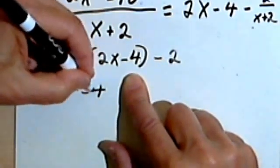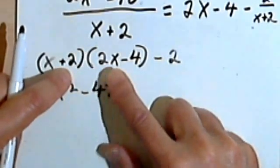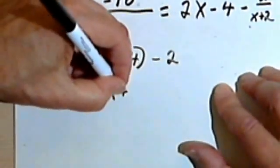My inside terms are 2 and 2x, so that gives me a positive 4x.